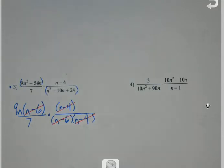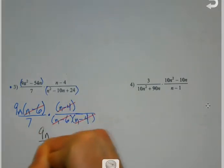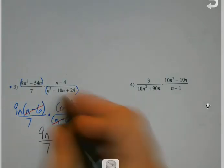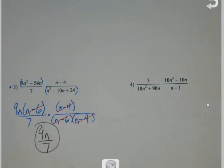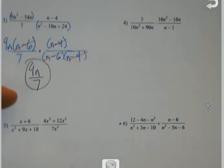So once I get all that wiped out, I've got this 9n and this 7 left. 9 and 7 doesn't reduce anymore, so I'm done. But you have to factor with these.